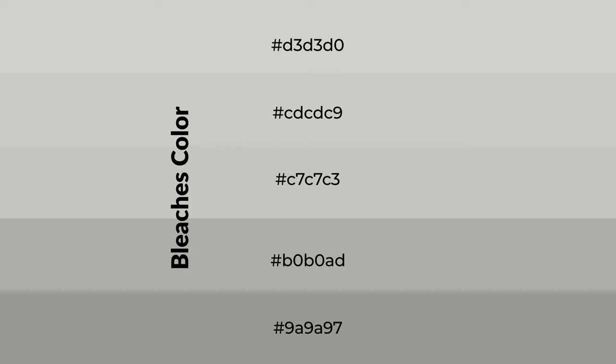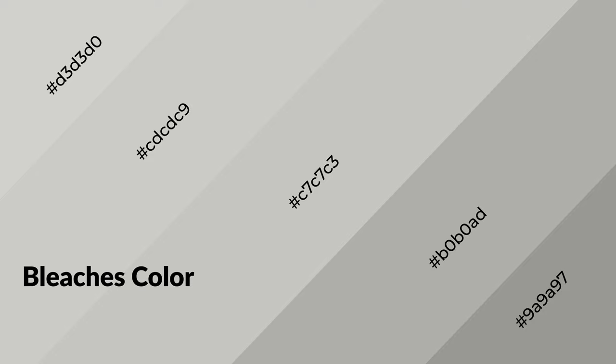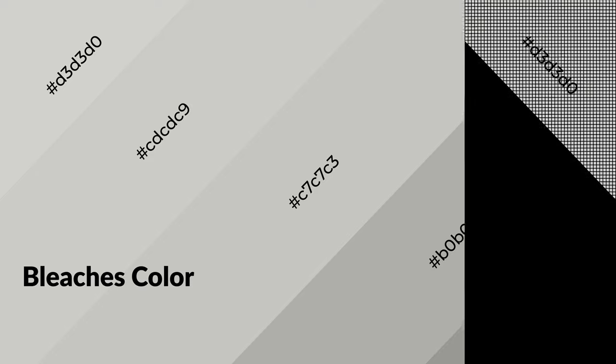Shades are used in patterns, 3D effects, and layers. Shades create depth and drama. Bleaches is a warm color and it emits cozier and active emotions. Warm colors are symbols of warmth, fire, heat, and sunshine.